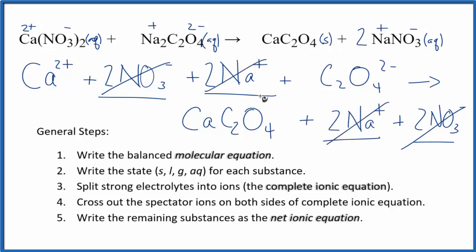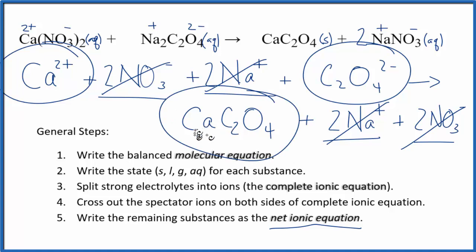But everything else is unique, and that is the net ionic equation. We have the calcium ion, the oxalate ion, and then we have the solid calcium oxalate. Let me write the states in and clean it up, then we'll have our net ionic equation.